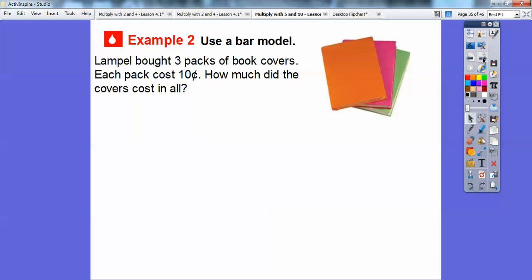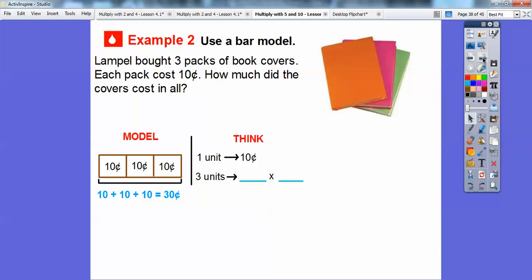We're going to use a bar model. Lampelle bought three packs of book covers. Each pack cost ten cents. How much did the covers cost in all? Here's a model right here. There's for three ten cents for our three packs of book covers. Each one's ten cents. If we add all those up, ten plus ten plus ten equals thirty. Let's think about this. One unit is ten cents. Three units would just be three times ten. We already know three times ten because we just added them up right here is thirty. This is going to be thirty cents.